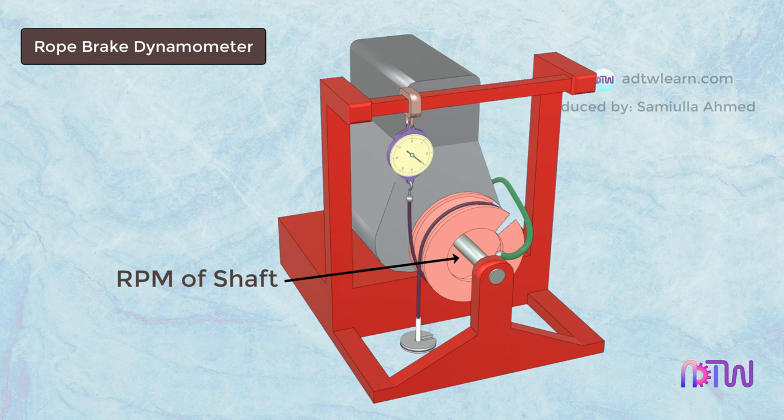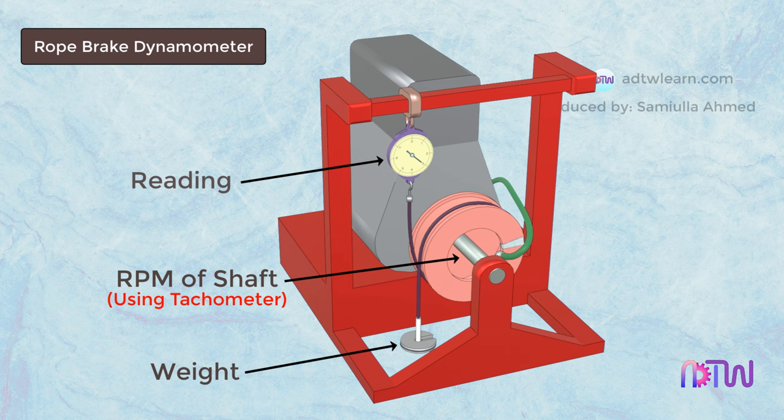After this, we will measure the speed of the shaft using a tachometer. Since we knew the speed of the shaft in RPM, the weight hanging on the rope, the reading of the spring balance, the diameter of the pulley, and the diameter of the rope.